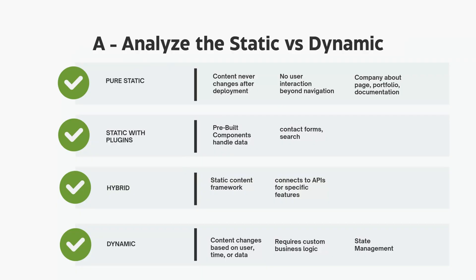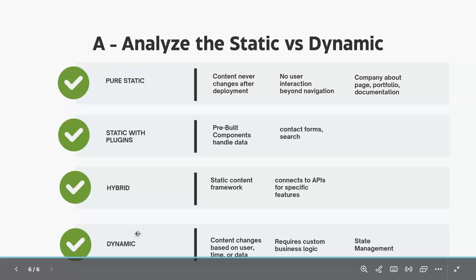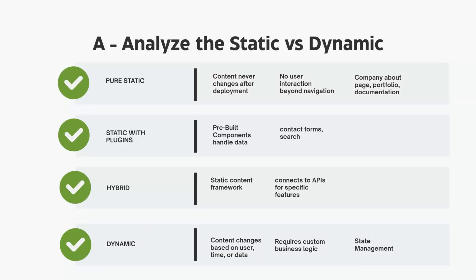Next up: Analyze how much content is static or dynamic. This breaks into four levels. Pure static websites where nothing changes after deployment, like a portfolio or about-us page. Static with plugins like WordPress where you configure pre-built components. Hybrid, where you have static content but connect to APIs for specific dynamic features like a blog with live comments. And finally, fully dynamic applications where everything changes based on user data, like dashboards or social apps. If you don't tell AI which level you are at, it will make assumptions — and those assumptions might be wrong. A WordPress site doesn't need React state management, but a fully functional dashboard does.